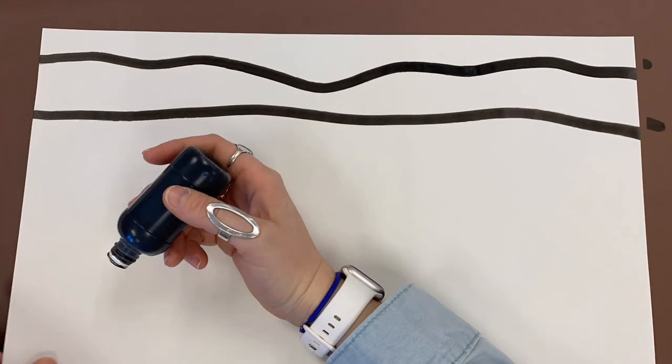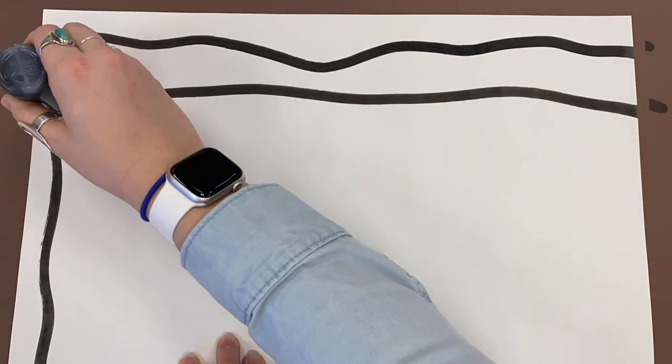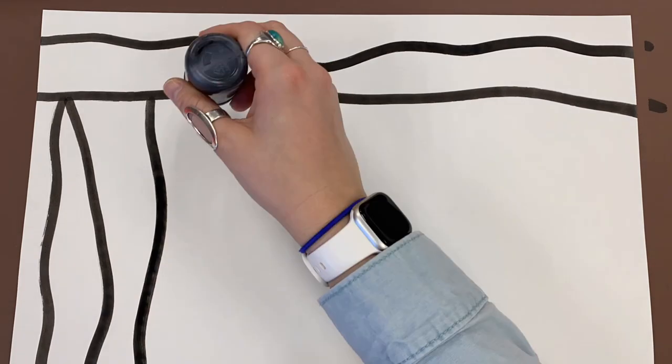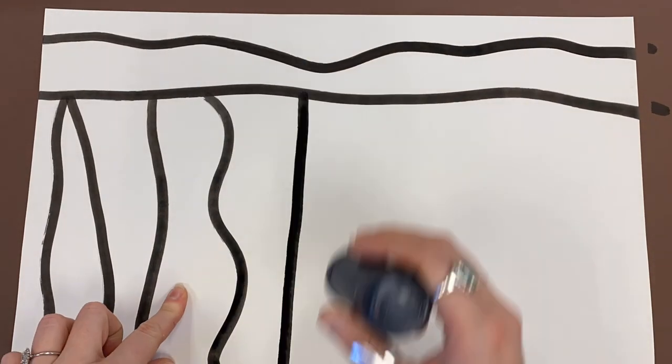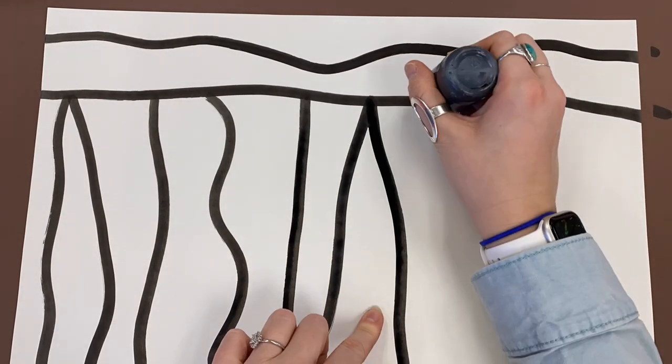Now when you're drawing these vertical lines, they can be kind of parallel or they can touch at the top kind of like this one, it's up to you.